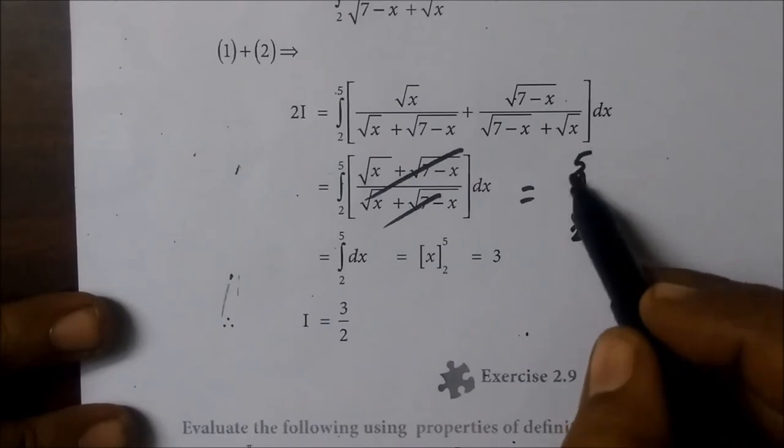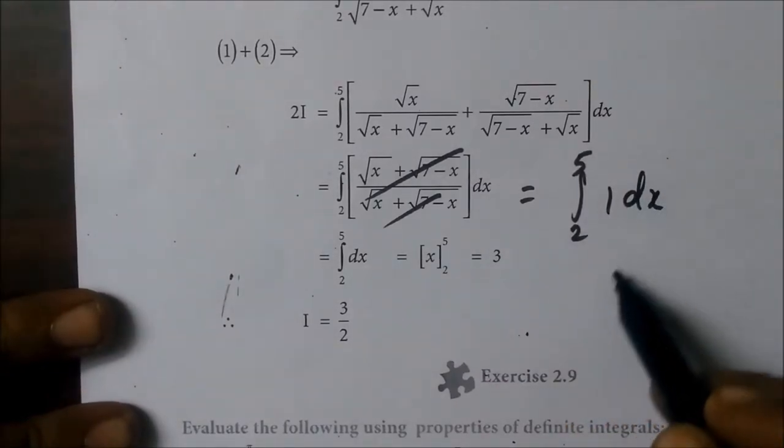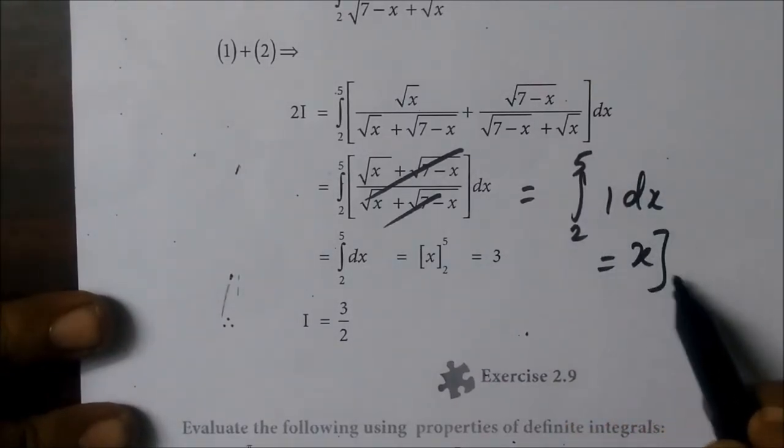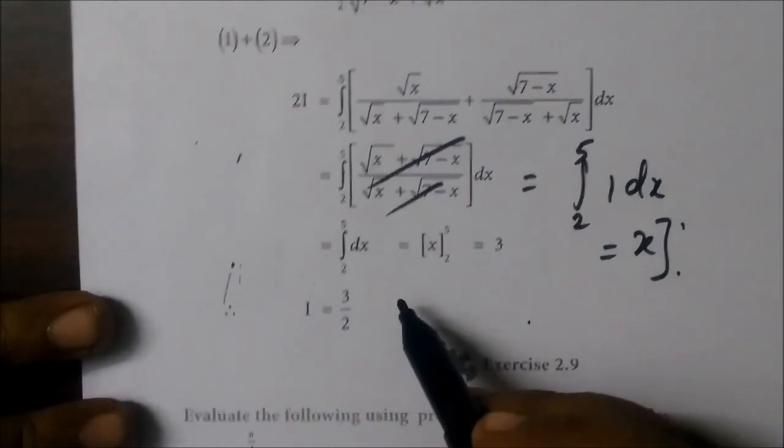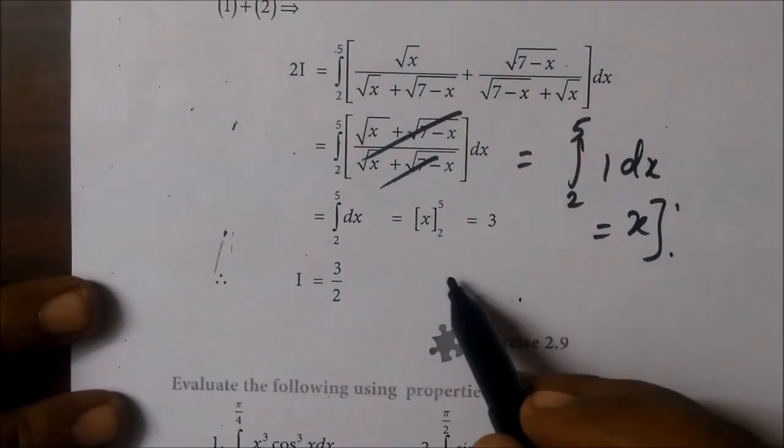So 2 to 5, 1dx. This is equal to the upper limit minus lower limit. So this part is over.